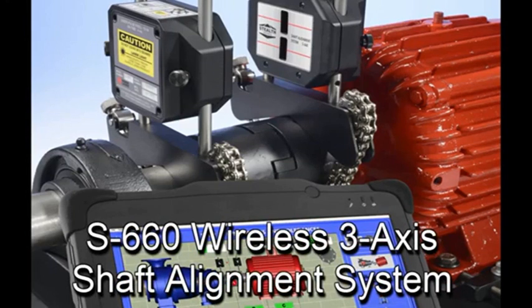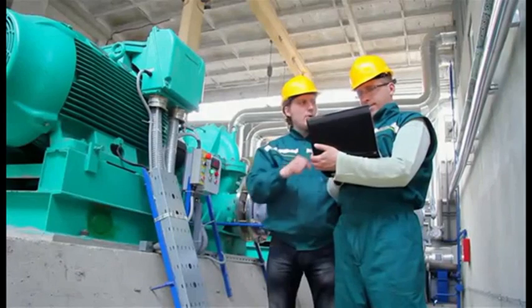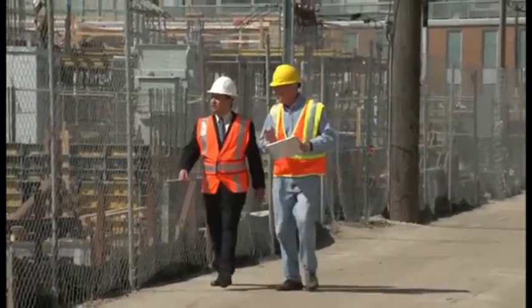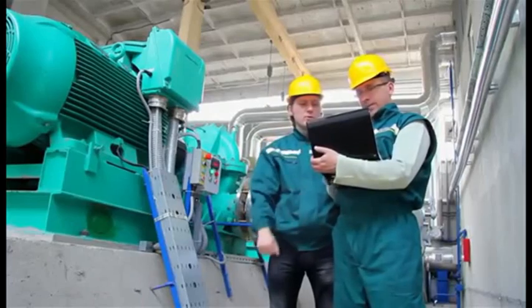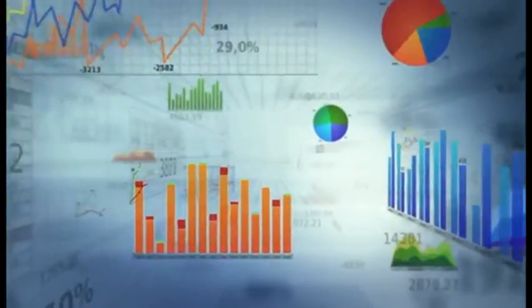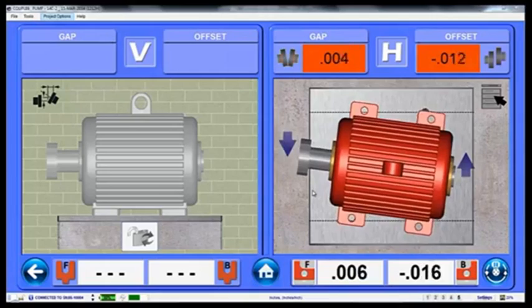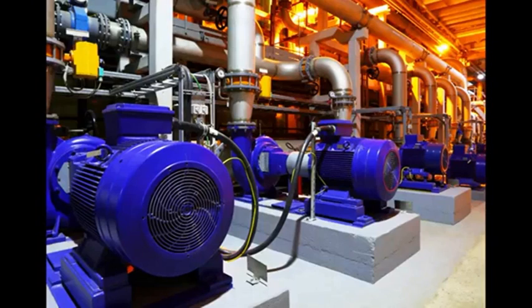With all these features included in an affordable package, is there any reason to look any further? We didn't think so. Assuming that your boss is going to pry a few dollars out of his wallet, let's show you how to get the most shaft alignment value for his budget with the S660 wireless shaft alignment system, the most powerful entry level system on the market. So let's get started.